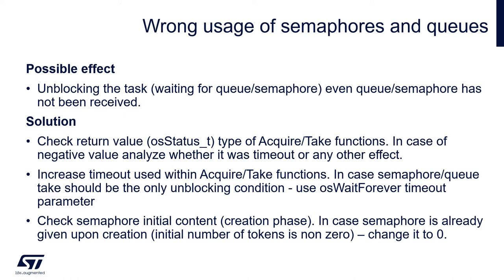Sometimes we can face a situation where a task waiting for a semaphore is unblocked immediately even though the semaphore has not been given yet. One possible root cause is a too-small timeout specified in the function combined with a lack of monitoring of the returned value. Remember that semaphore and queue wait/acquire functions wait for the component for a specified time — the last argument — and then return a negative value of type osStatus_t. The task continues execution even if the requested object was not received, so it is important to check the return value.